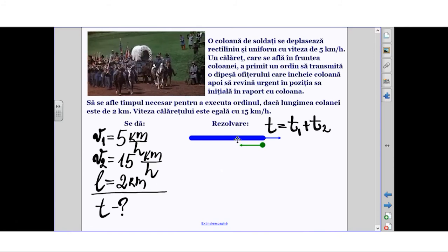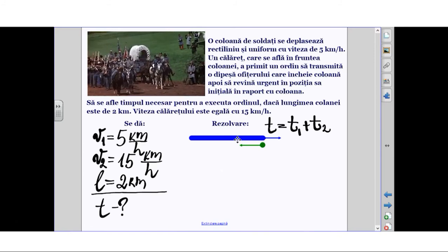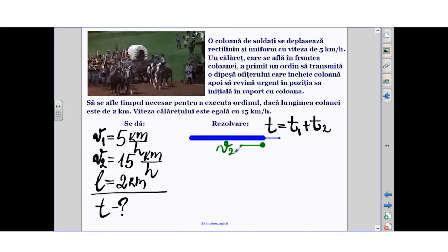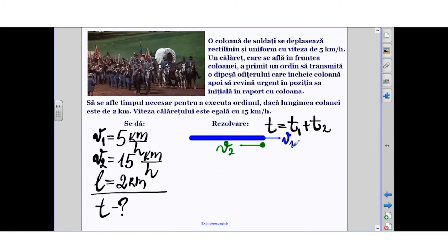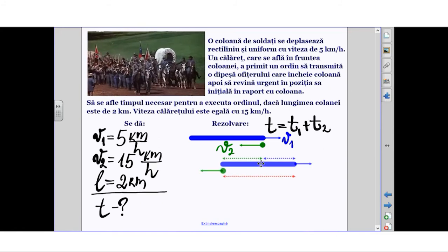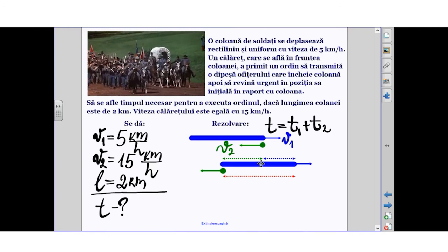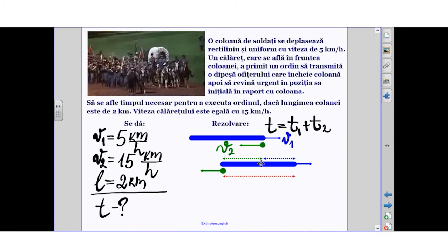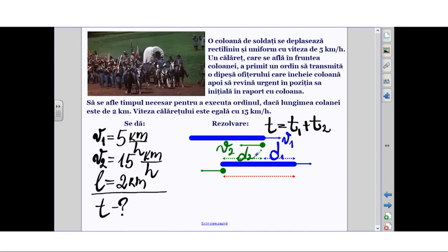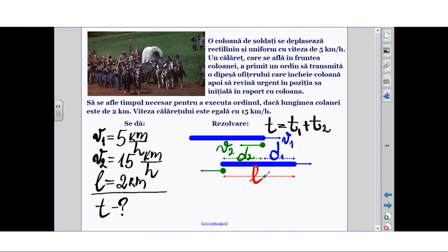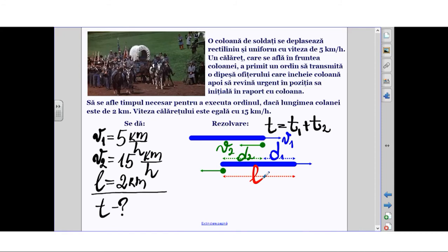We're talking about time T1 needed for the horseman to transmit the message to the officer at the rear of the column, and time T2 to return. How would our problem look schematically? Initially, the horseman represented by the green dot is at the front of the column and starts with his velocity V2 to transmit the message. The column moves with velocity V1. After a certain time interval, the horseman reaches the officer at the rear of the column and transmits the message. We mark this moment. During this time, the column traveled a certain distance d1, and the horseman traveled distance d2. The column length we denote by L.